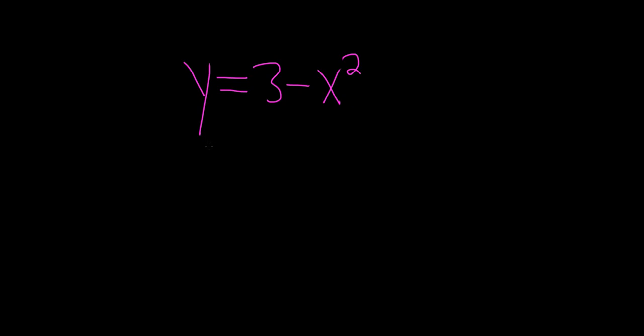In this problem, we have to represent this plane curve as a vector-valued function. So recall a vector-valued function can be written in the following form: r of t is equal to x of t times i hat plus y of t times j hat.